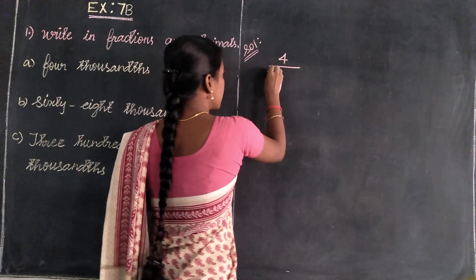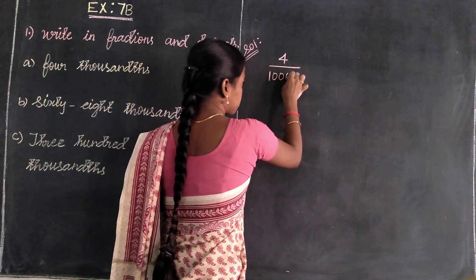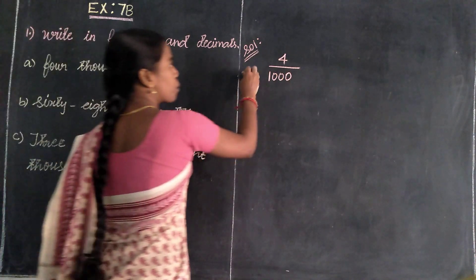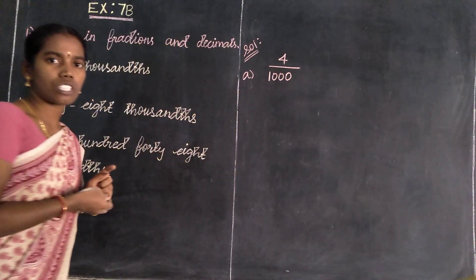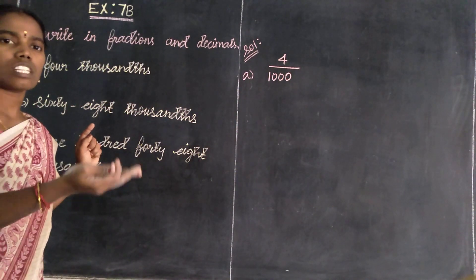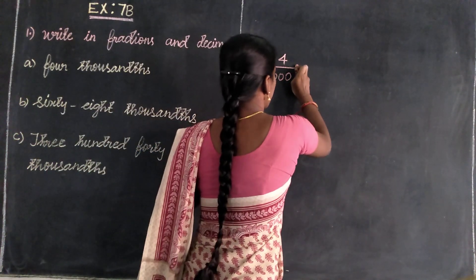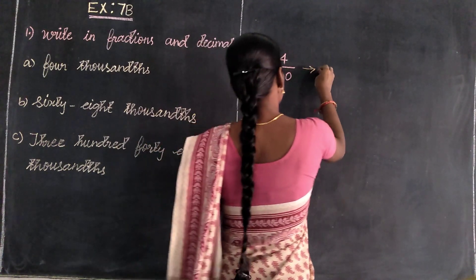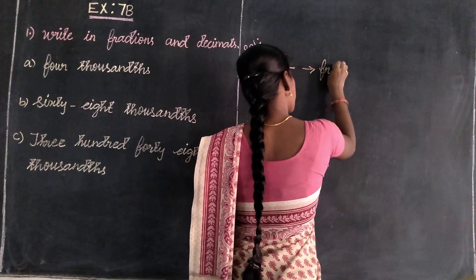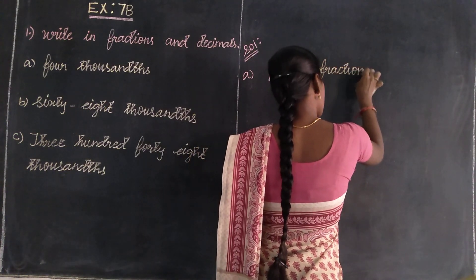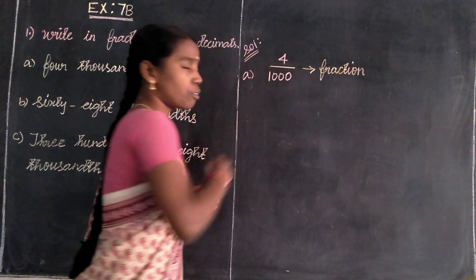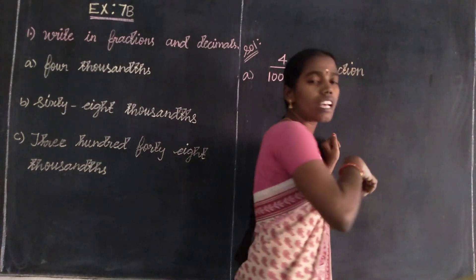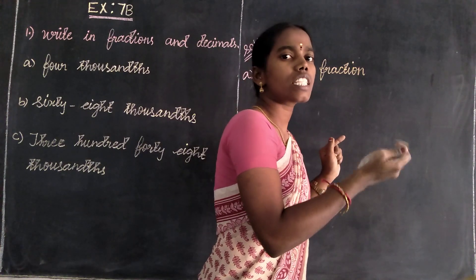That is 4 divided by 1,000. So this value, to change into decimals — the first problem is a fractional value: 4 divided by 1,000. It is a fraction. To change this fraction into decimals: 4 is the dividend value, and thousand is the divisor value.